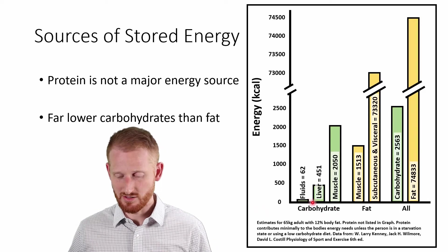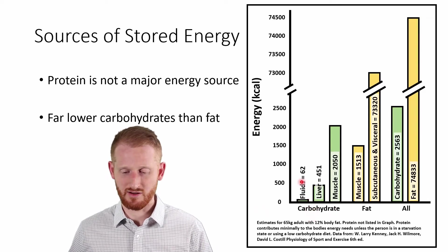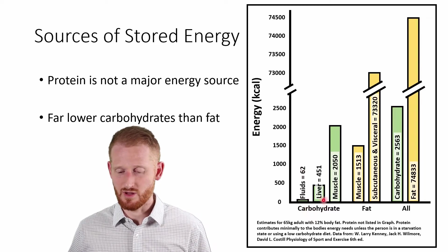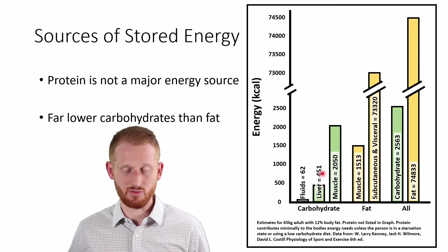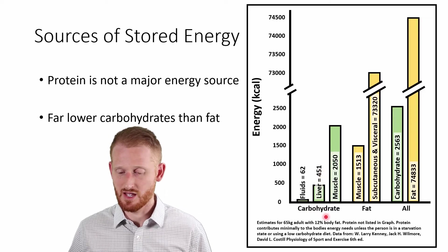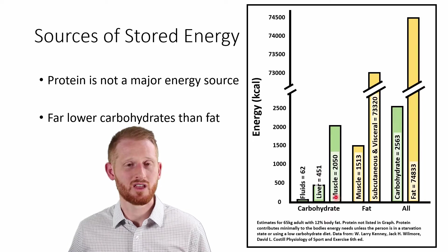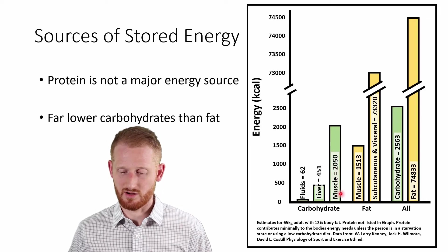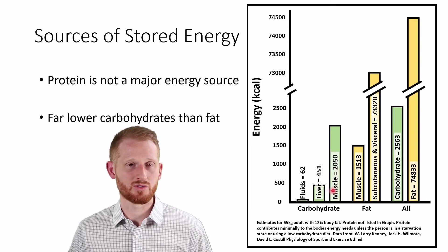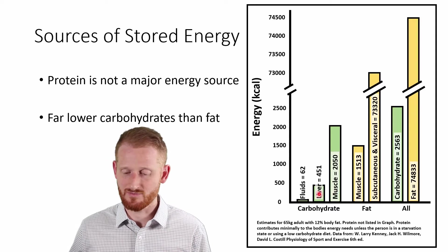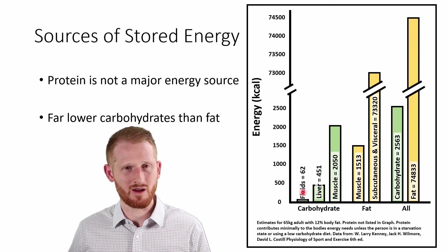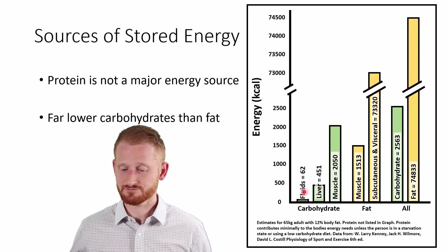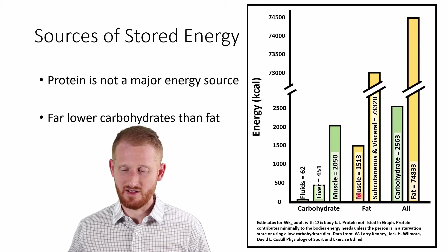So we have our carbohydrate storage locations. Various fluids in the body — for instance, the blood — we have blood glucose. We have our liver that stores around 451 kilocalories worth of energy in carbohydrate. We also have our muscles that store about 2,050 calories worth of carbohydrate. In the liver and muscle, stored carbohydrates are in the form of glycogen, while in fluids — primarily blood — it's going to be in the form of glucose.